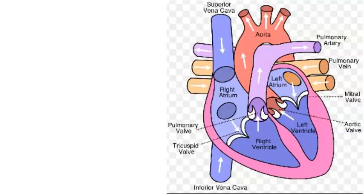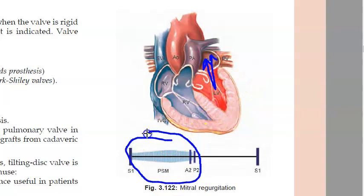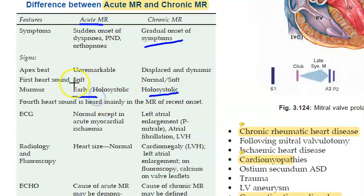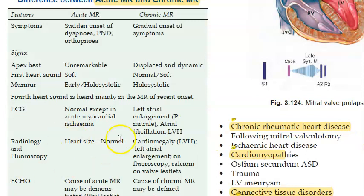Now listen to normal heart sounds and then mitral regurgitation pan-systolic murmur. In chronic MR there is gradual onset of symptoms with a pan-systolic murmur, while in acute MR it will be an early systolic murmur. Also, the fourth heart sound S4 is heard mainly in MR of recent onset — that means in acute MR you can have S4.